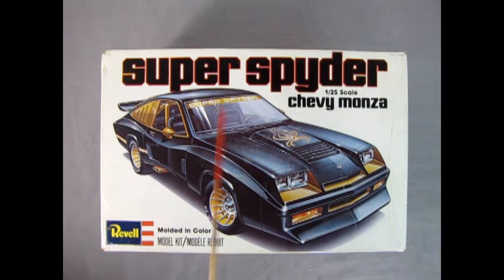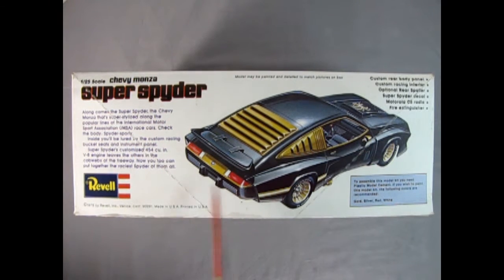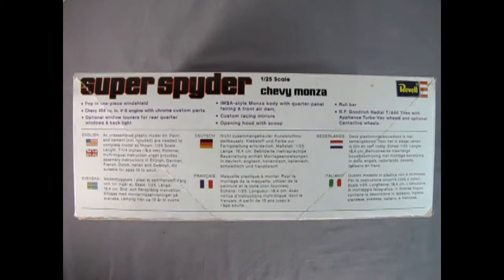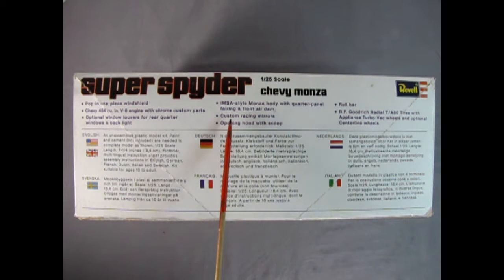The Revell Chevy Monza super spider is a 1/25th scale model kit molded in color. Our super spider includes custom rear body panel, custom racing interior, optional rear spoiler, Motorola CB radio, and a fire extinguisher. The model also includes a paw pin one piece windshield, Chevy 454 cubic inch V8 engine with chrome custom parts, optional window louvers for rear quarter windows and backlight, IMSA style Monza body with quarter panel fairing and front air dam, custom racing mirrors, opening hood with scoop, a roll bar, BF Goodrich Radial TA tires with appliance turbo vec wheels and optional centerline wheels.